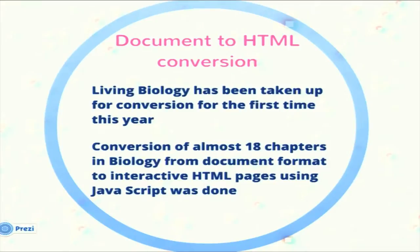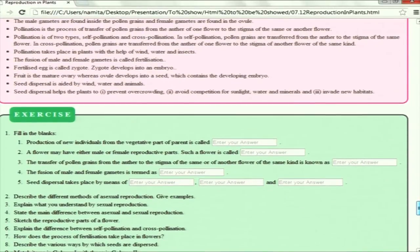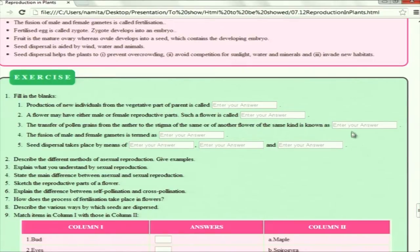On the first objective, Living Biology — I am proud to say — has been taken up for the first time this year in the summer internship program. We have converted around 18 chapters of the book into interactive HTML pages with JavaScript. As you can see, the whole chapter has been converted into an HTML page and the exercise part has been made interactive by allowing the student to enter answers even in fill-in-the-blanks.